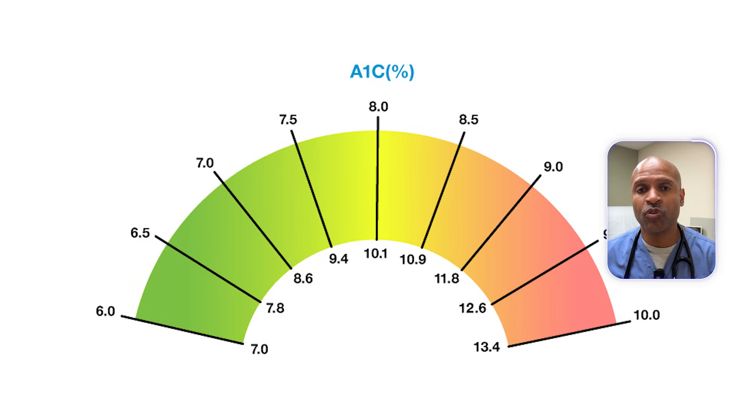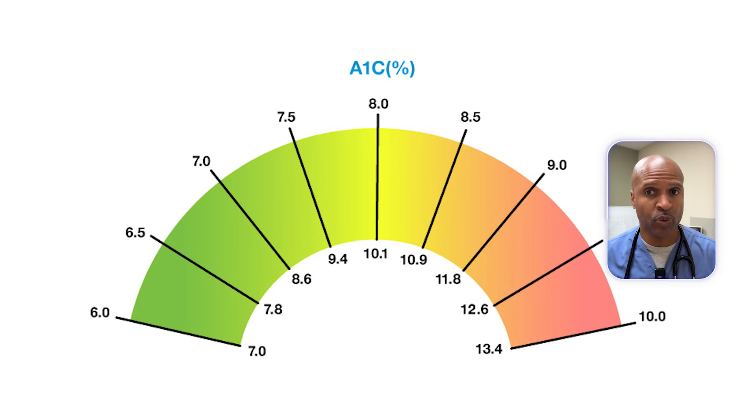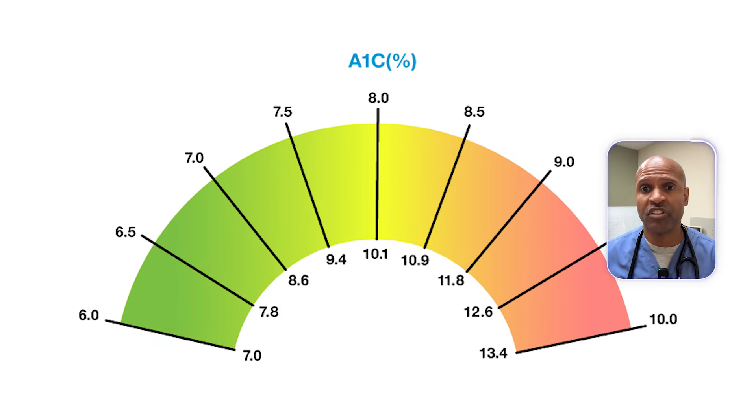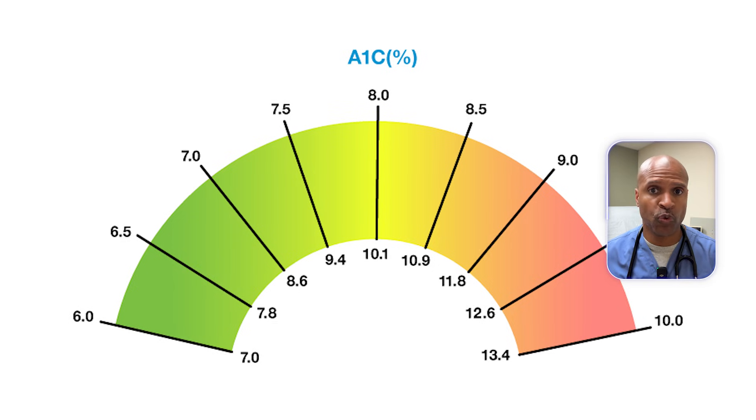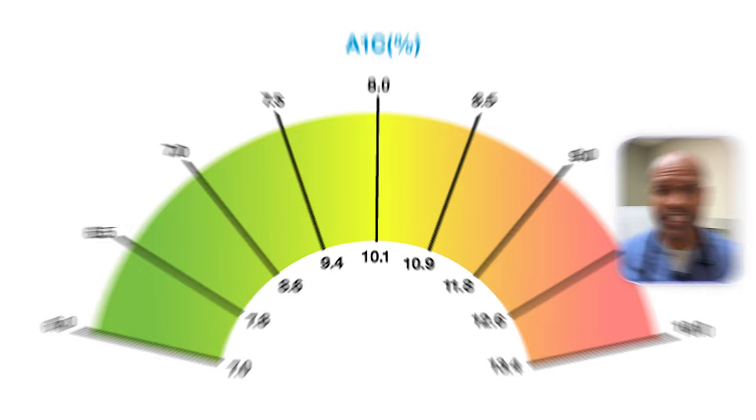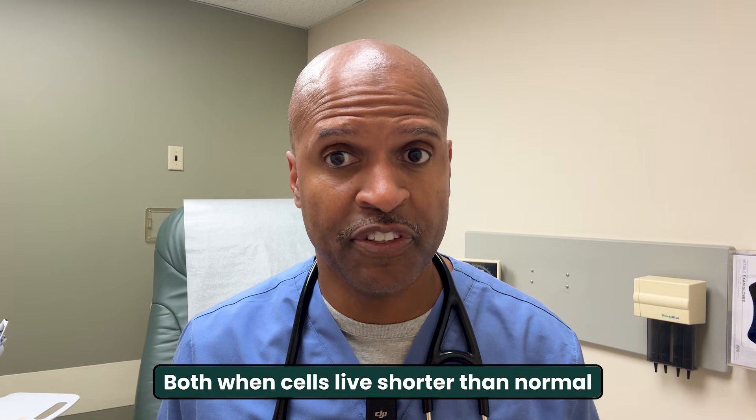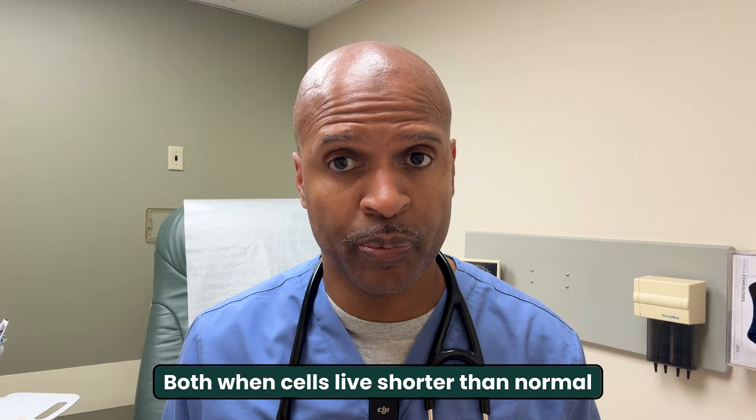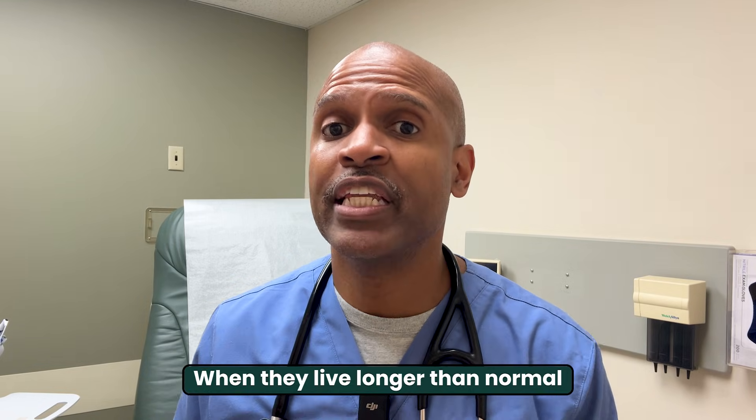A1C is not only a sugar report card — it also depends on how long your red blood cells live. And there's a simple calculation that lets us adjust for that, both when cells live shorter than normal and when they live longer than normal. I'll preview the math now, then show you exactly how to use it.